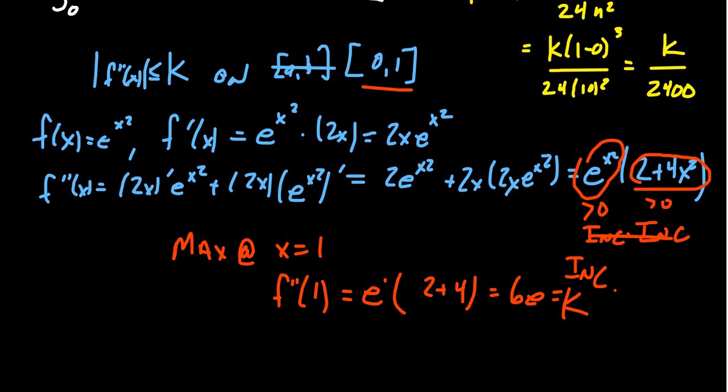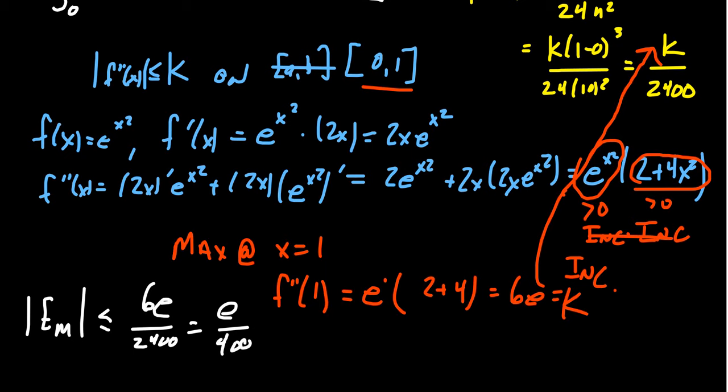So we want to plug that in above. And so the error of our midpoint rule is going to be less than or equal to 6e over 2400, or e over 400. 6 goes into 24, 4 times. But we probably prefer an estimate of some kind. This number is approximately 0.007. Just use a calculator for these estimates.